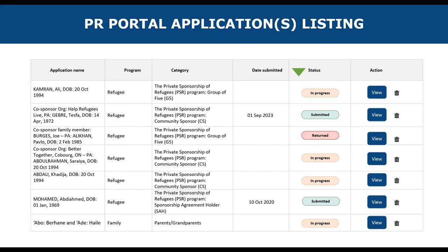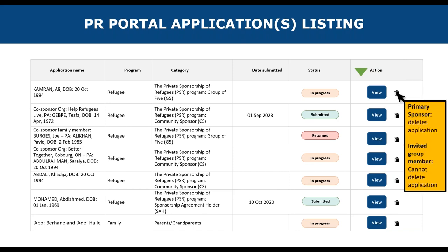An application that has been initiated and is still being edited will show as a yellow in-progress bar. An application that has been submitted to IRCC will appear as a green submitted bar. An application which has been returned will have a red return bar. Under the actions column, you will click on the view button to open the application, and next to that you will see the delete button. If you're a primary sponsor and you select delete, it deletes everything for that application. If you are an invited group member, you cannot delete the application — the primary sponsor will need to do that.